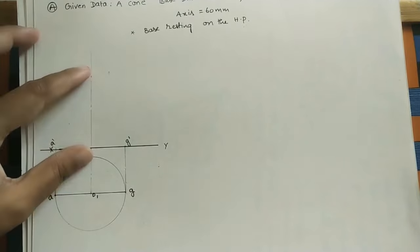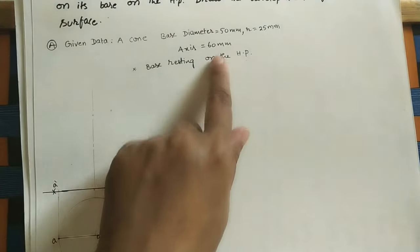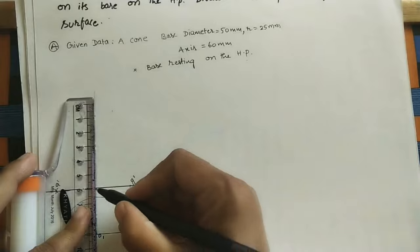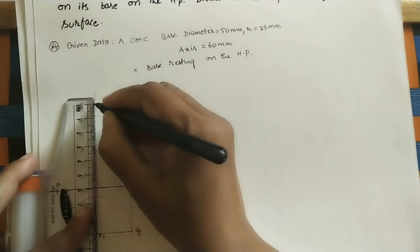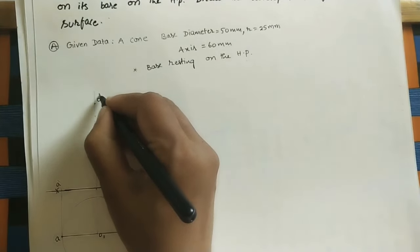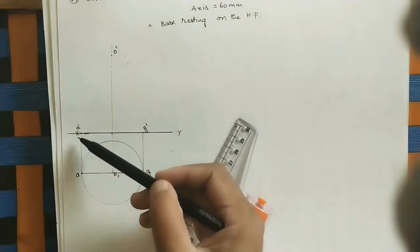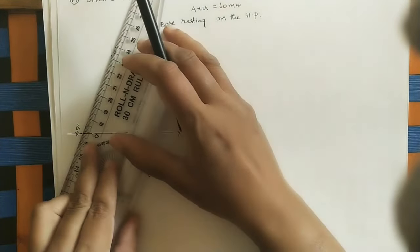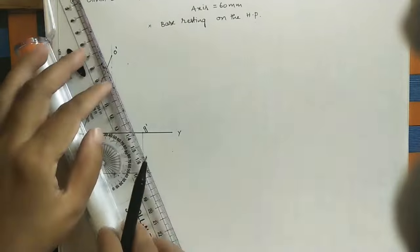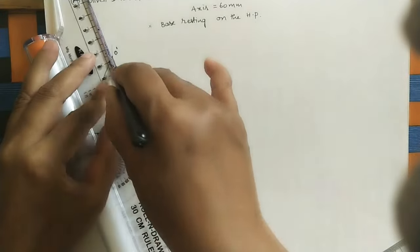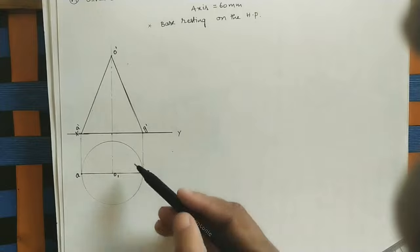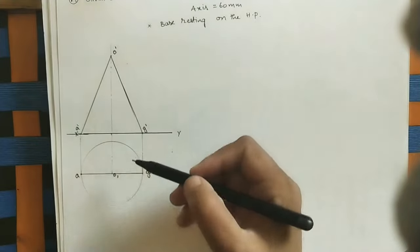On the axis line, mark the height of the cone — it is 6 centimeters. Mark the apex at 6 centimeters from the XY line; this point is O-dash. Now join O-dash to the two base points A-dash and G-dash to get the slant edges of the front view.